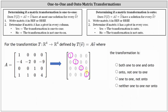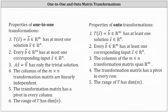Notice here we have a pivot in every column, and therefore the transformation is one-to-one. We also have a pivot in every row, and therefore the transformation is also onto. Therefore we select both one-to-one and onto. Knowing a matrix transformation is onto and one-to-one tells us a lot of information about the matrix transformation, so you may want to pause the video here and review the properties of one-to-one and onto transformations. I hope you found this helpful.